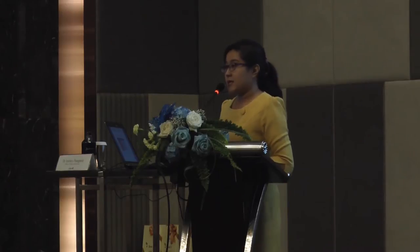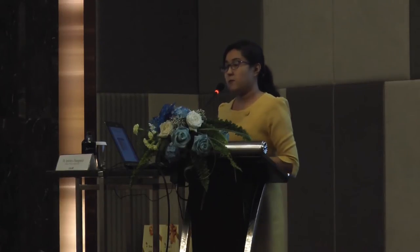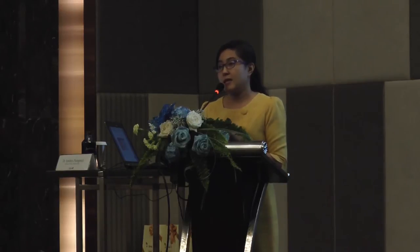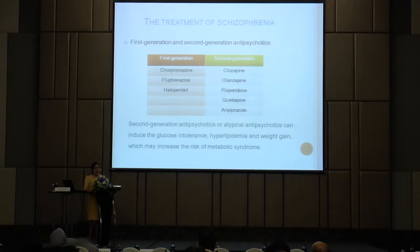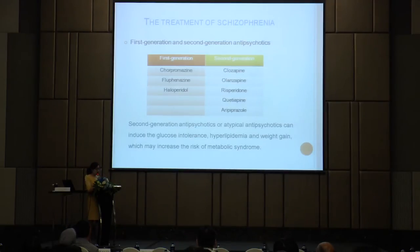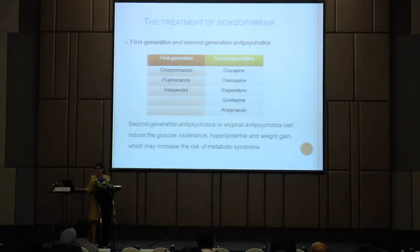There are two generations of antipsychotics: first-generation or typical antipsychotics, and second-generation or atypical antipsychotics, both developed according to dramatic growth in schizophrenia research. The first-generation antipsychotics have more serious side effects such as extrapyramidal syndrome or EPS. In comparison, second-generation antipsychotics are likely to produce fewer side effects, however many reports suggest they can induce glucose intolerance, hyperlipidemia, and weight gain, all involved in increased risk of metabolic syndrome.